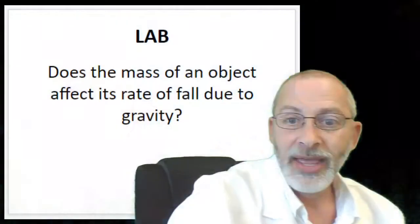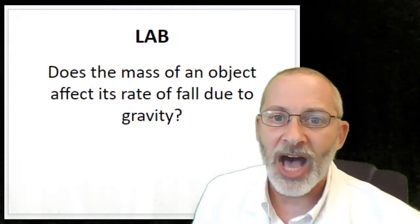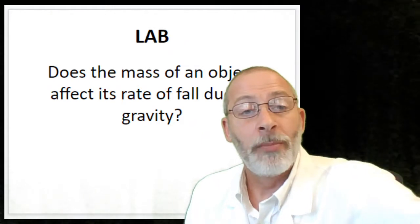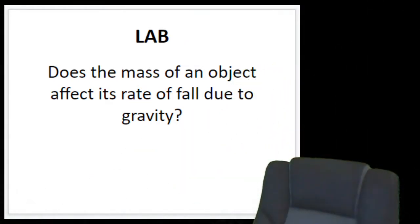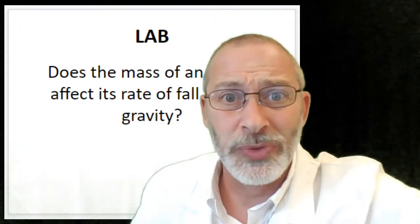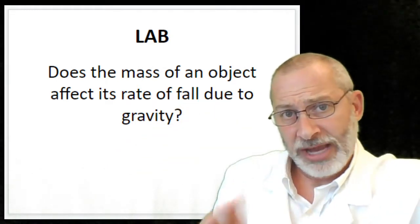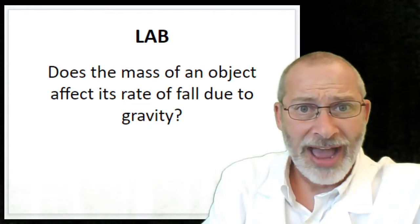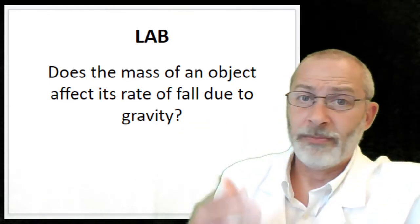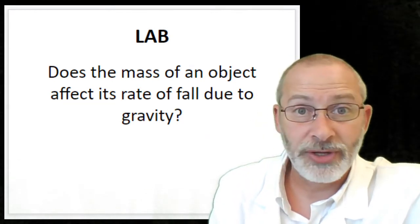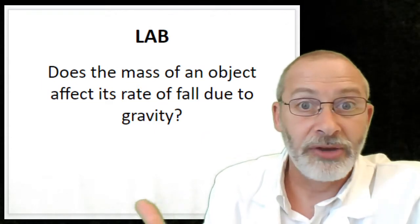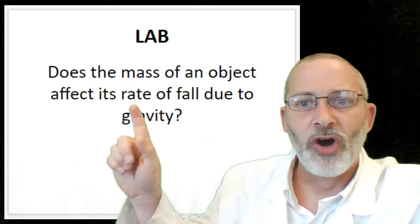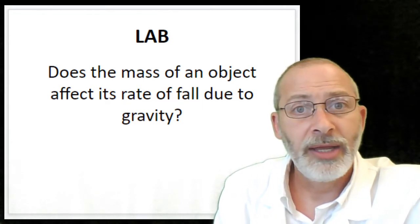So let's head back over there and look at it again. Does the mass of an object affect its rate of fall due to gravity? Take a moment now — you can pause me — and write your hypothesis. Some examples might be: the more mass the object has, the faster it's going to fall; the less massive, the faster it's going to fall; or mass doesn't have any effect on the rate of fall. You can think of different relationships between mass and rate of fall. Take a moment now and write a hypothesis.